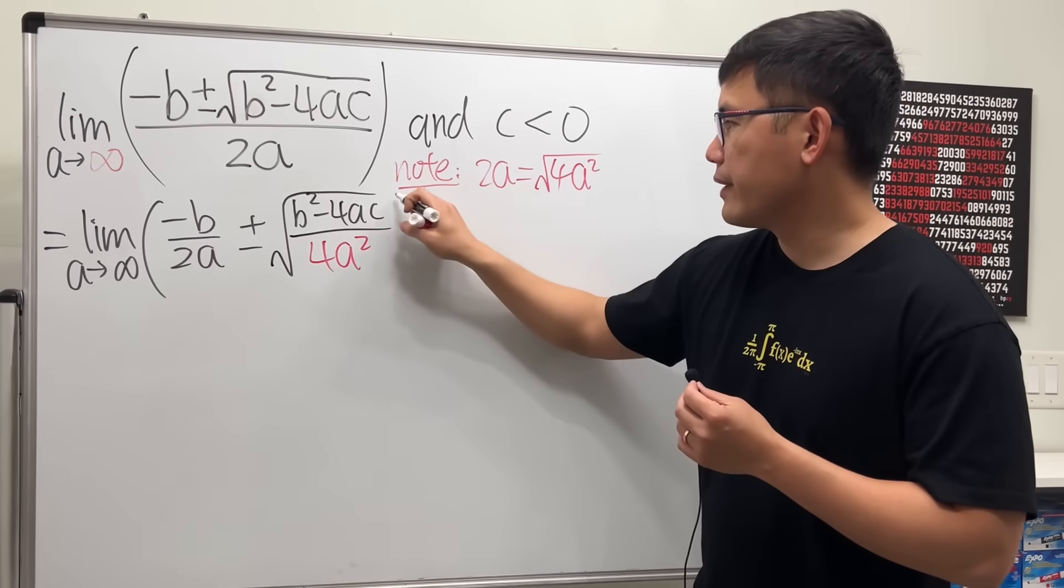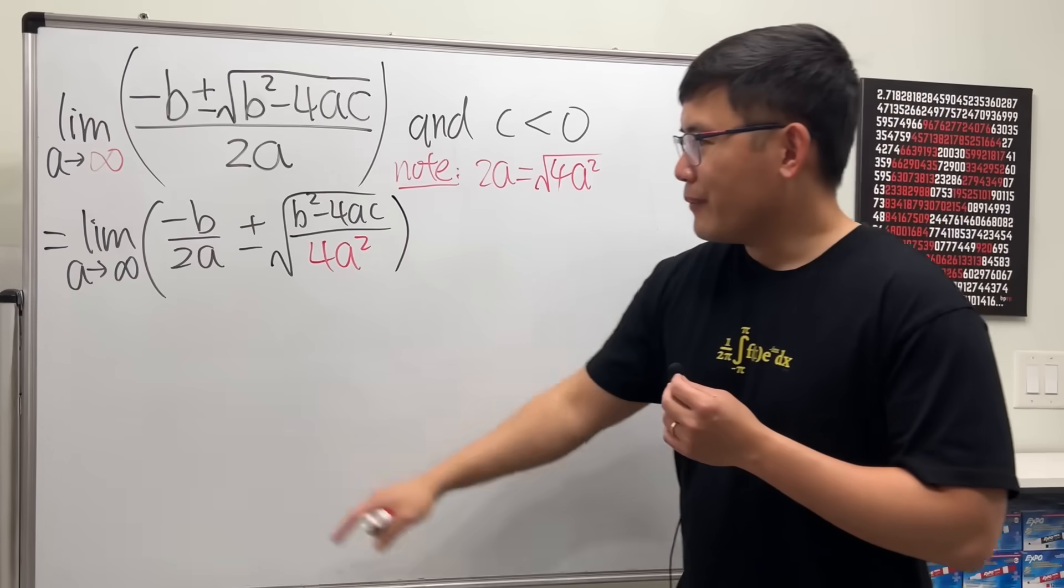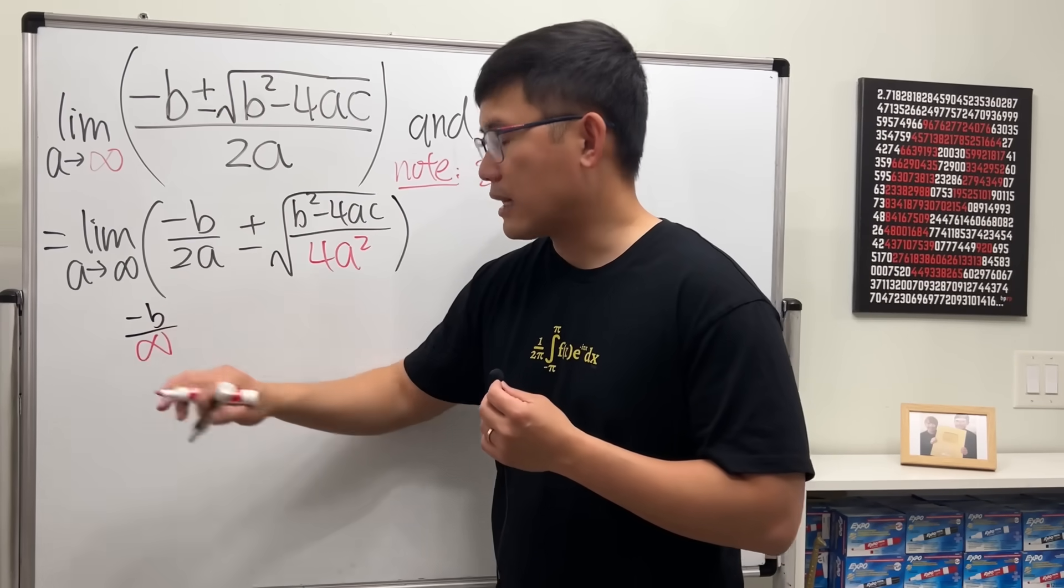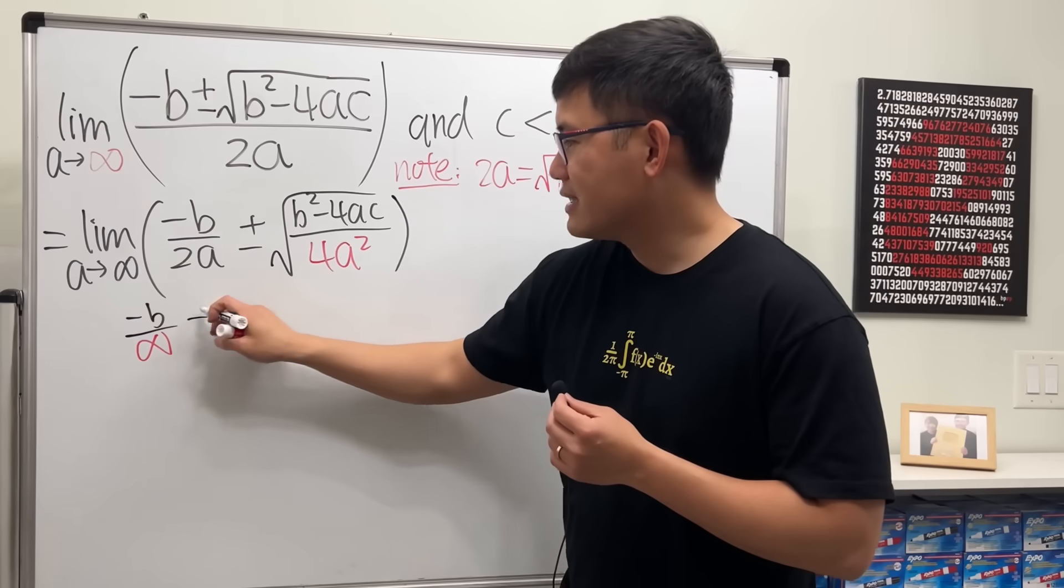Now if a is approaching infinity, the first part is -b over infinity, which goes to zero.